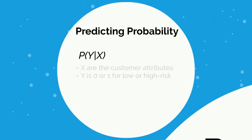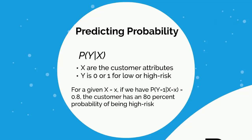In some scenarios you might want to predict probability. Instead of just outputting high risk or low risk, you'd want to develop a probability that a customer would be high risk. We'll talk about this more when we get into probability theory. Probability notation will be important moving forward, and a basic understanding of probability theory will be covered in the fourth video on essential math competencies for machine learning.